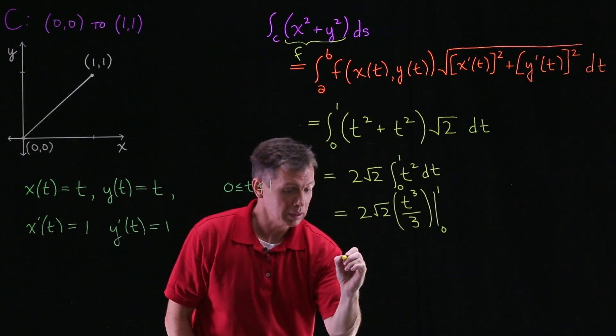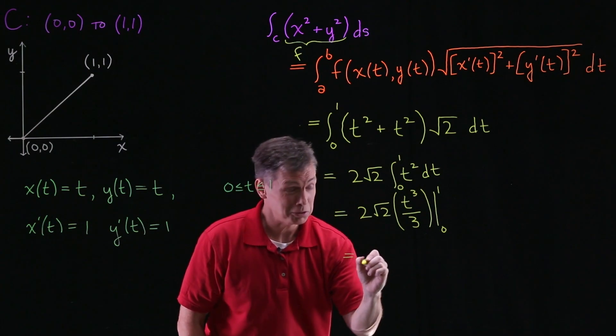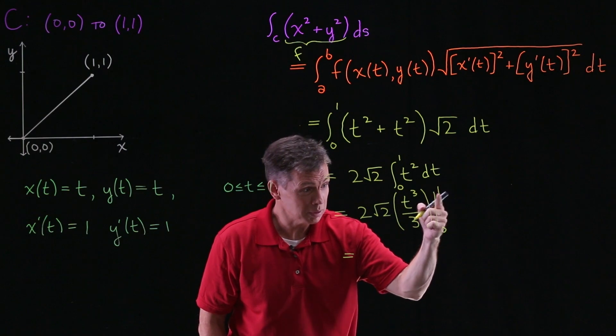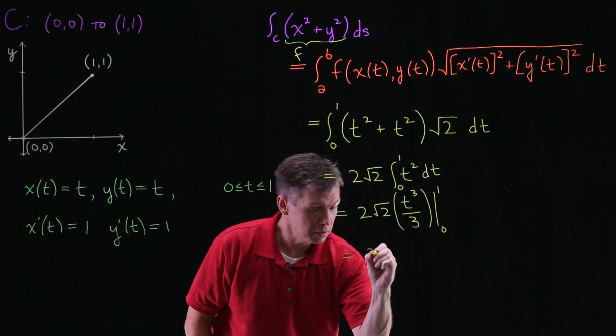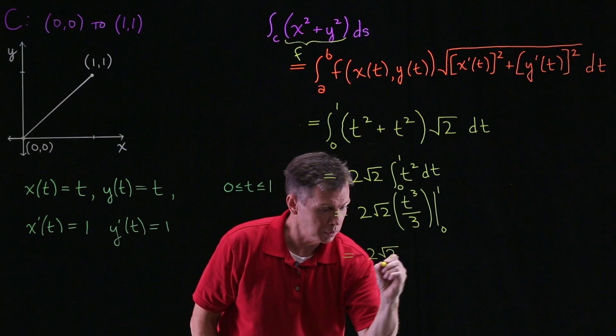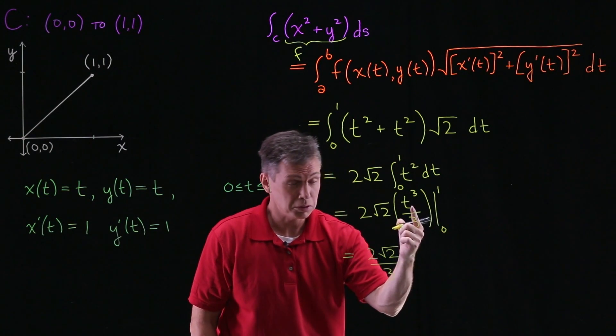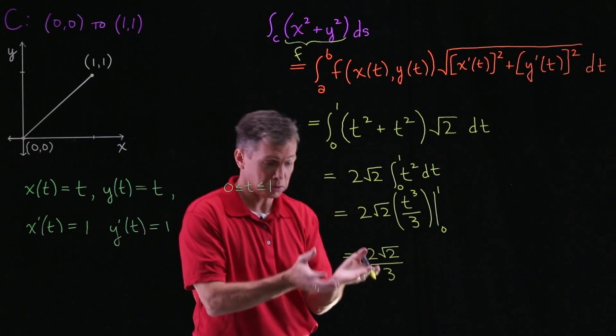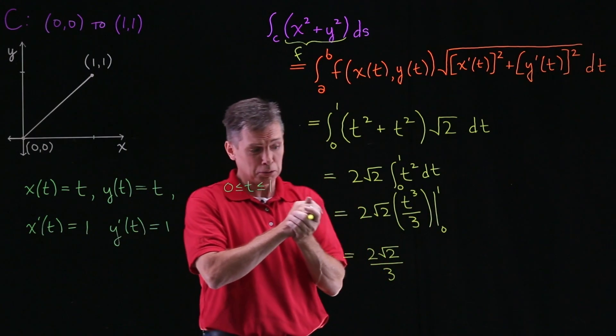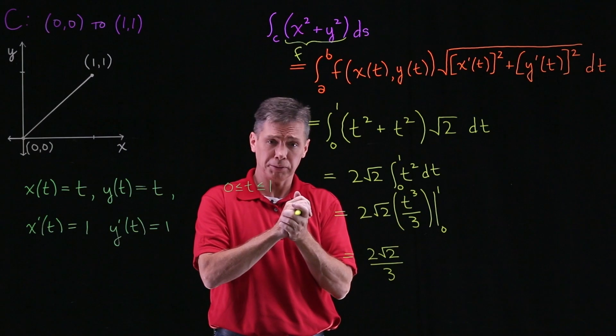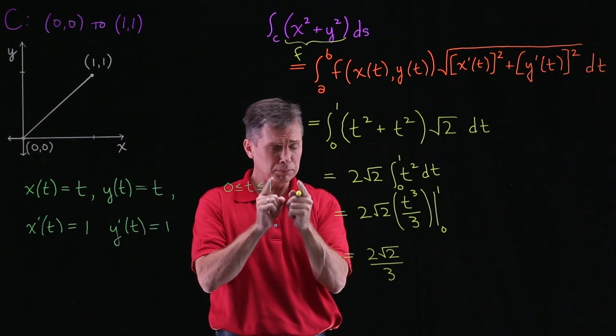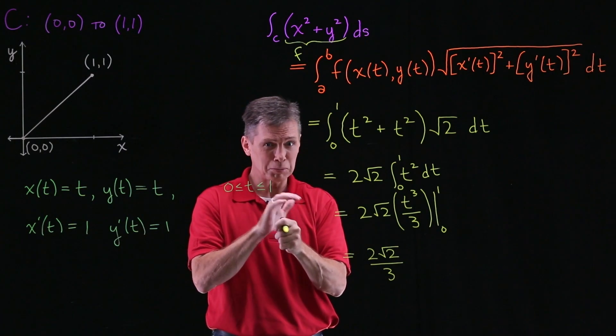Now we're plugging in. You got to love your 1s and 0s, right? If I plug in a 1, I'm just getting 1/3. So I'll say 2 times square root of 2 over 3, subtracting the 0 plugged in, which is 0. So 2√2/3 is my answer. Okay? Hope that made sense to you. Practice more on your own. It'll make even more sense.